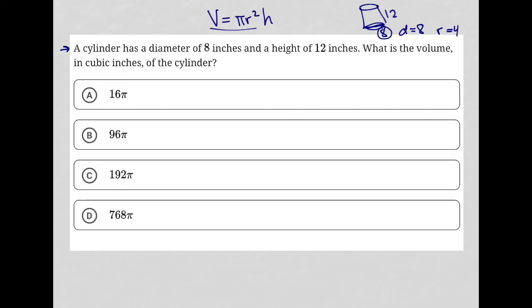So our equation here would turn into pi r being 4, 4 squared, h is 12. 4 squared is 16. 16 times 12 is 192. So this all ends up being 192 pi, which is choice C.